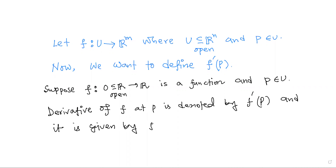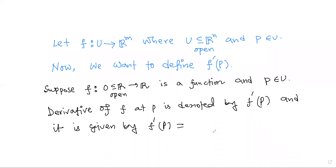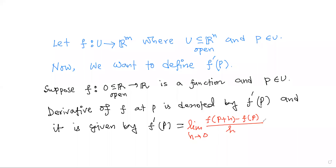The derivative of f at p, denoted f'(p), is given by a limit. We take the ratio of the functional value near p and the increment, then take the limit as h tends to 0: f'(p) = lim(h→0) [f(p+h) - f(p)] / h. This is the definition for the derivative of a real-valued function defined on an open subset of R.